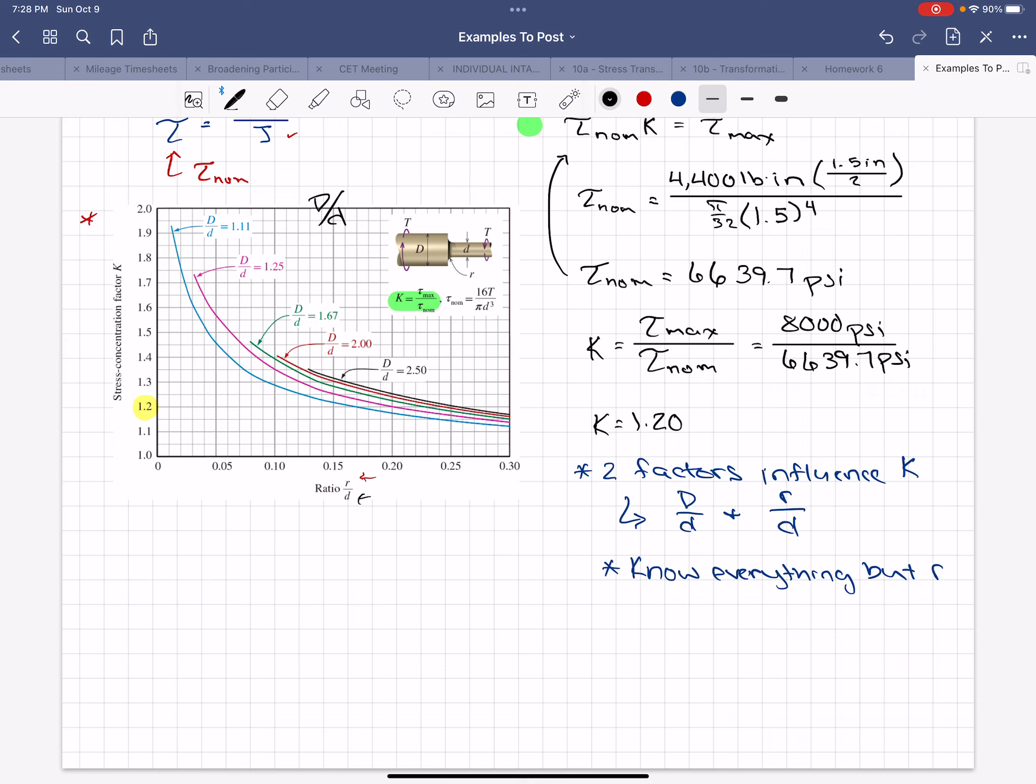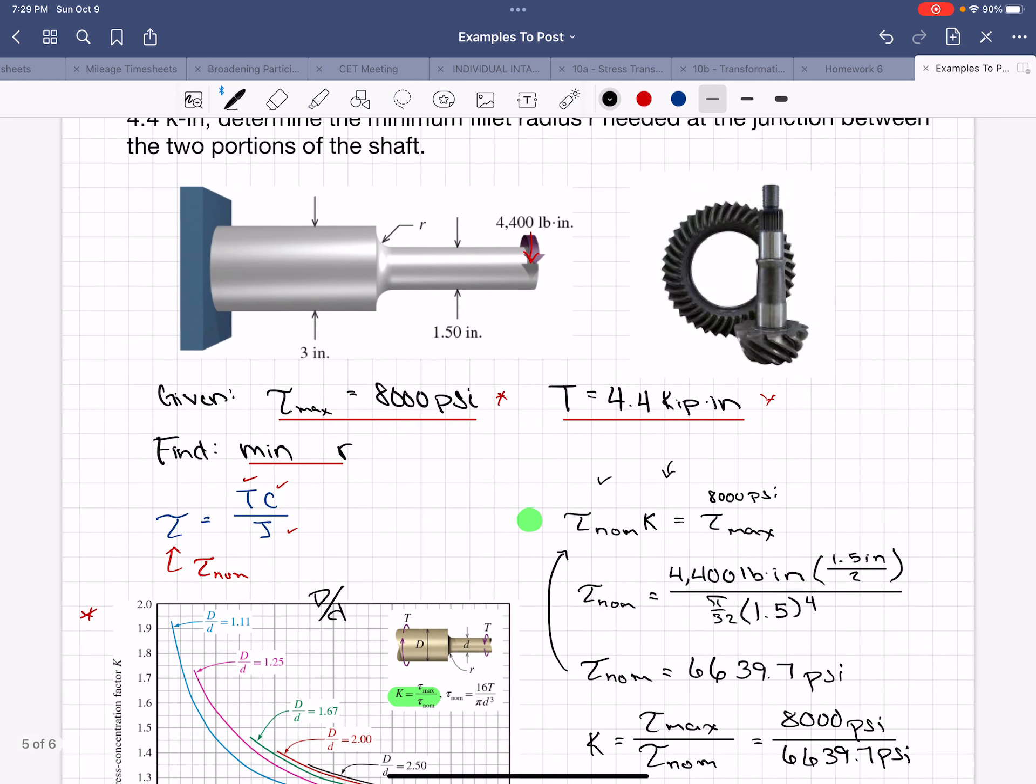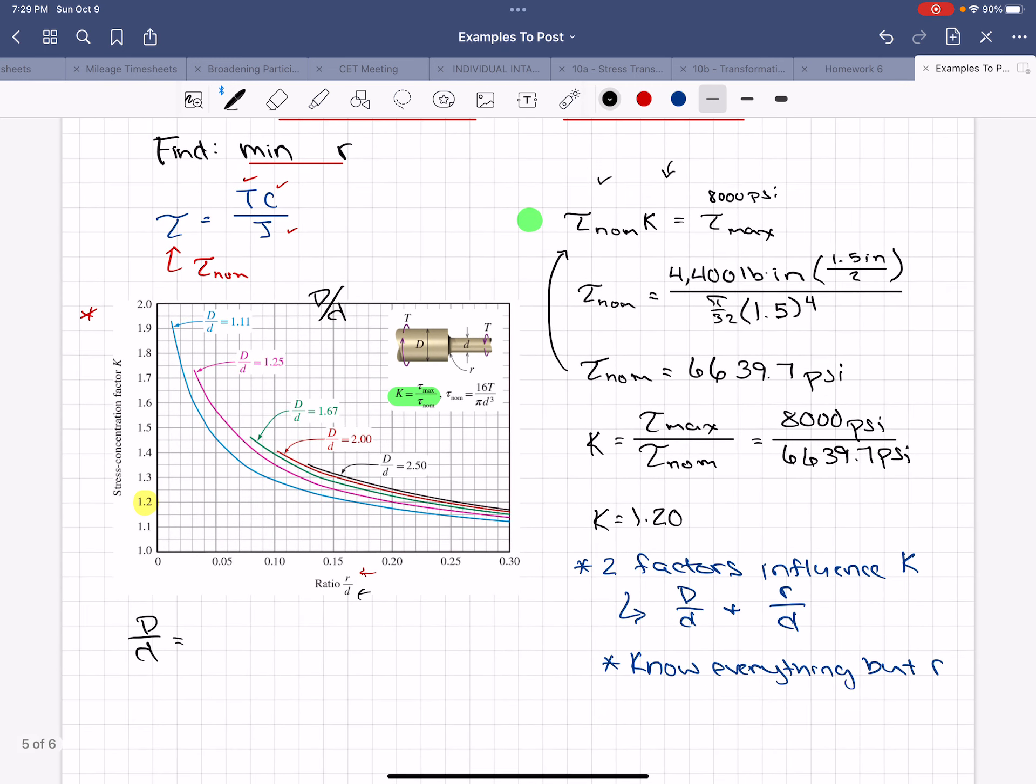If we calculate what big D over little d is, big D is 3 inches and little d is 1.5 inches, so we have 3 inches over 1.5 inches and it equals 2. So we're going to be on this red line here.